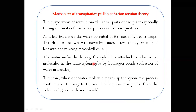The water molecules leaving the xylem are attached to other water molecules in the same xylem by hydrogen bond — cohesion between water molecules. Therefore when one water molecule moves up the xylem, the process continues all the way to the root where water is pulled from the xylem cells, tracheids and vessels.